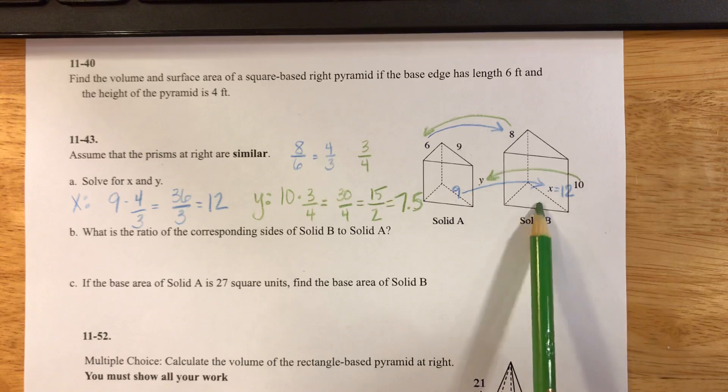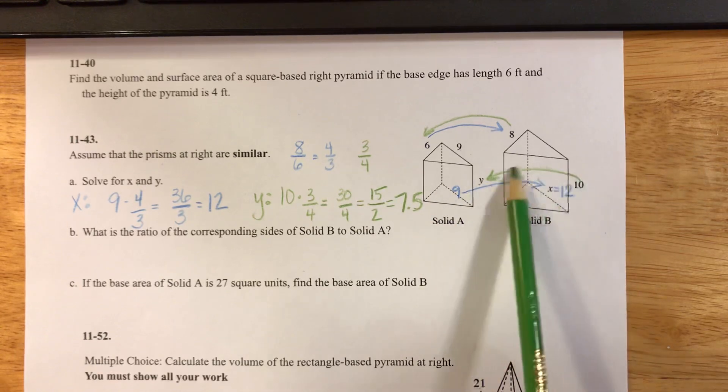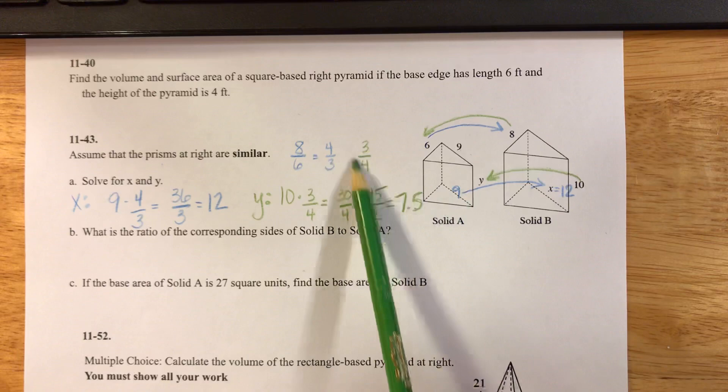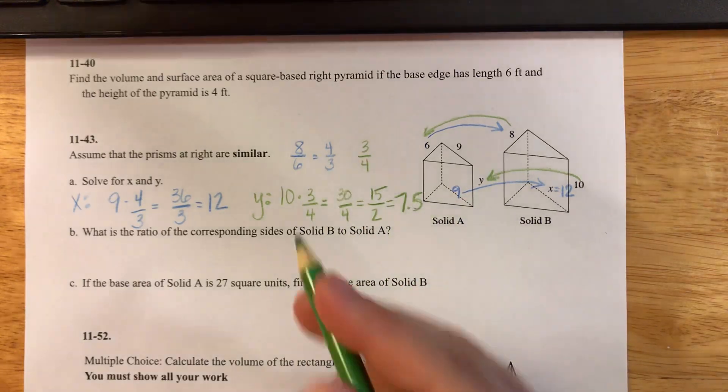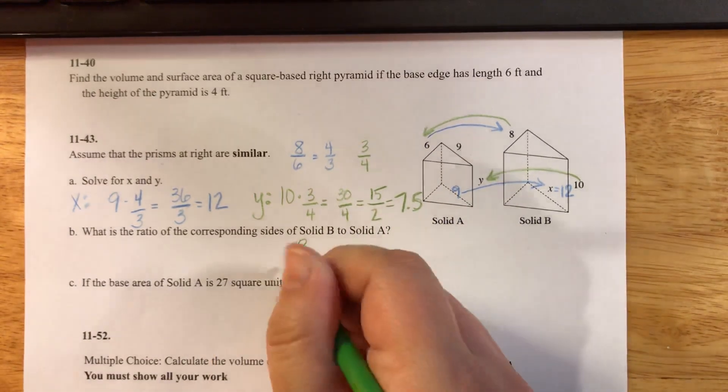If I'm going from B to A, that means I'm going from bigger to smaller. So I'm going to use this ratio. I would say the ratio from B to A would be 3 over 4.